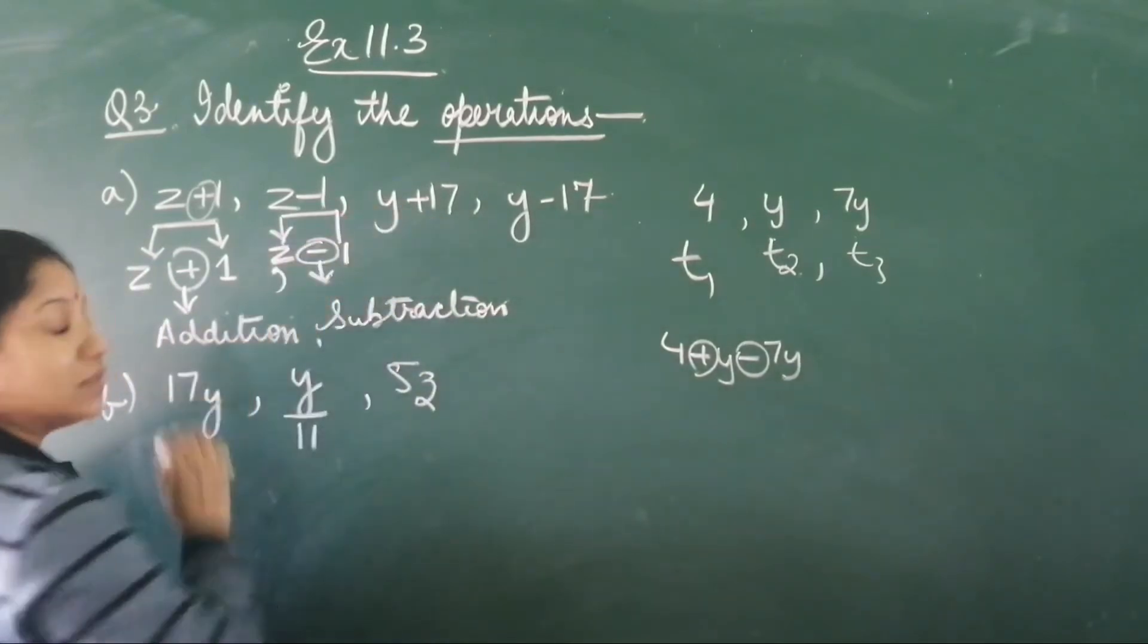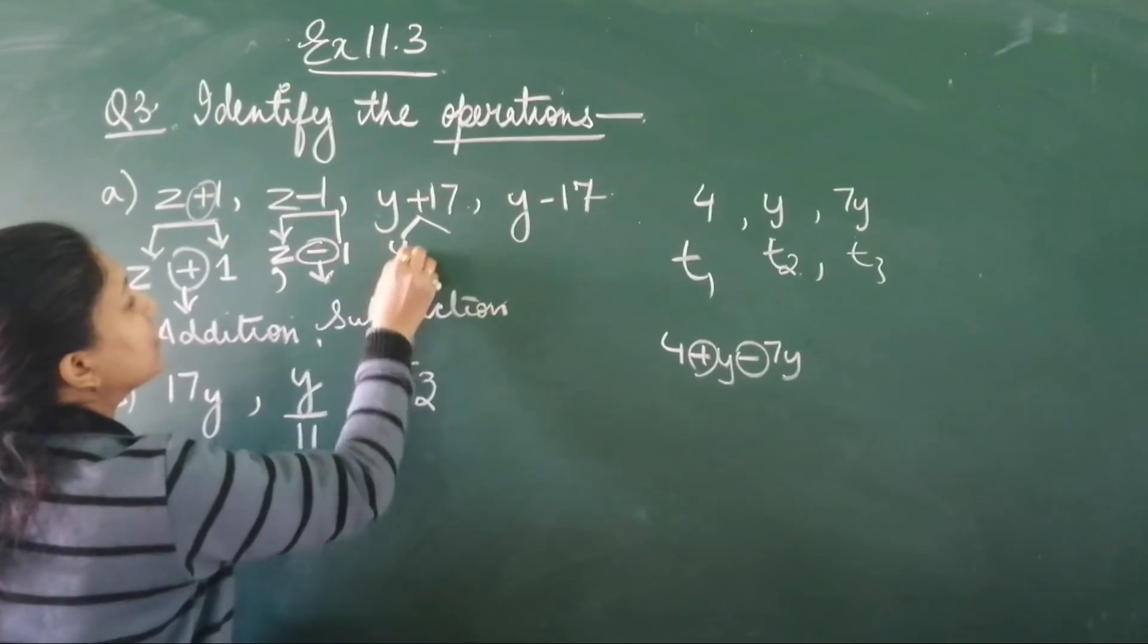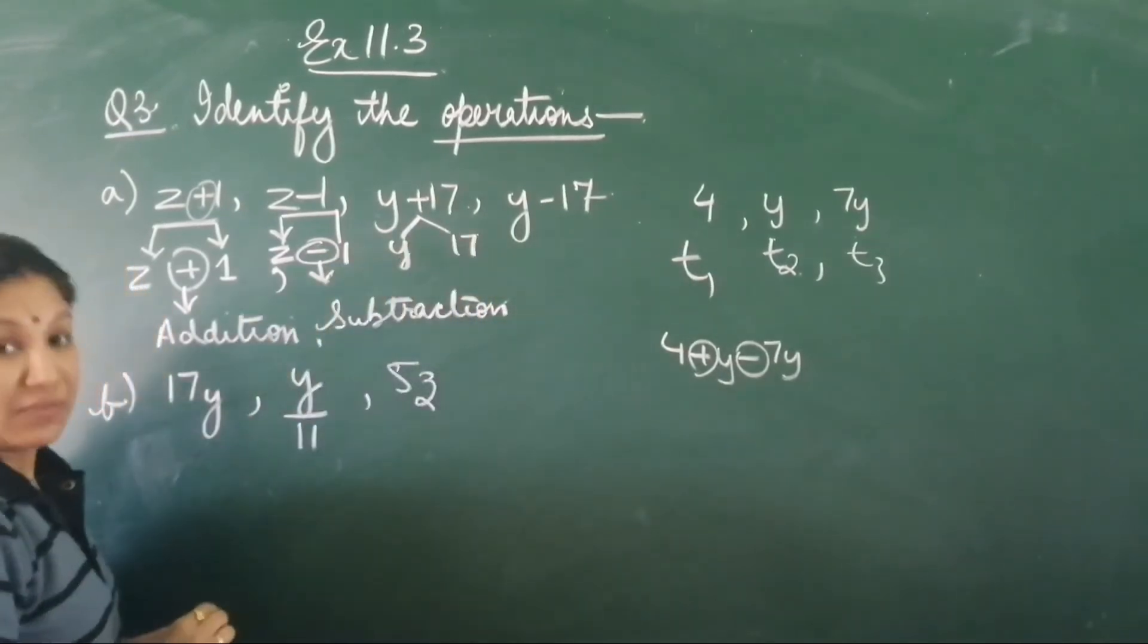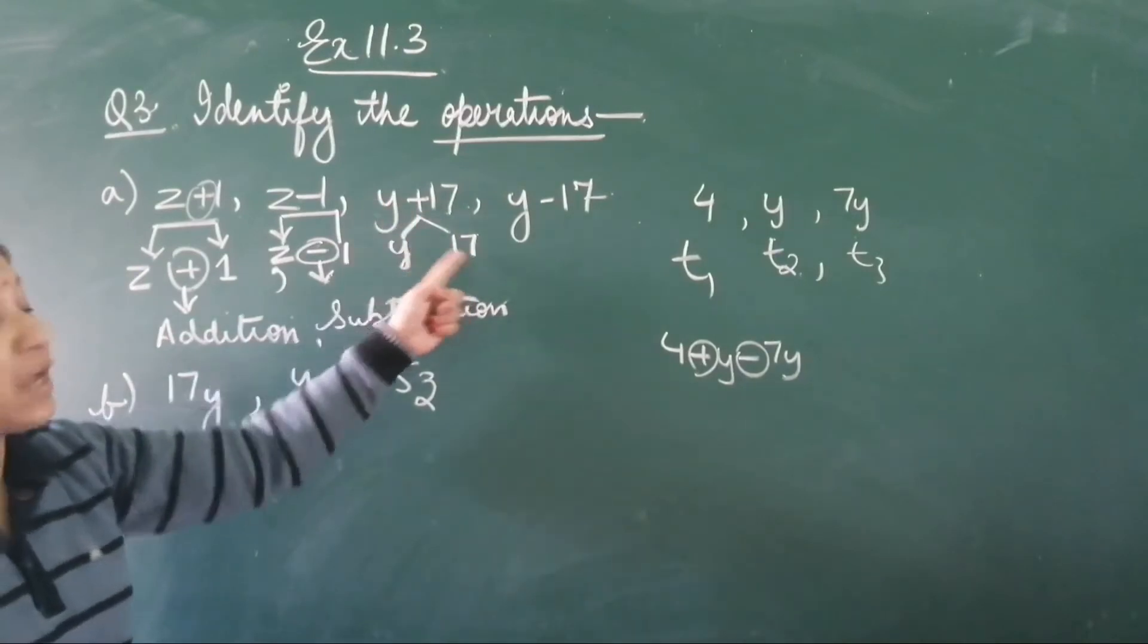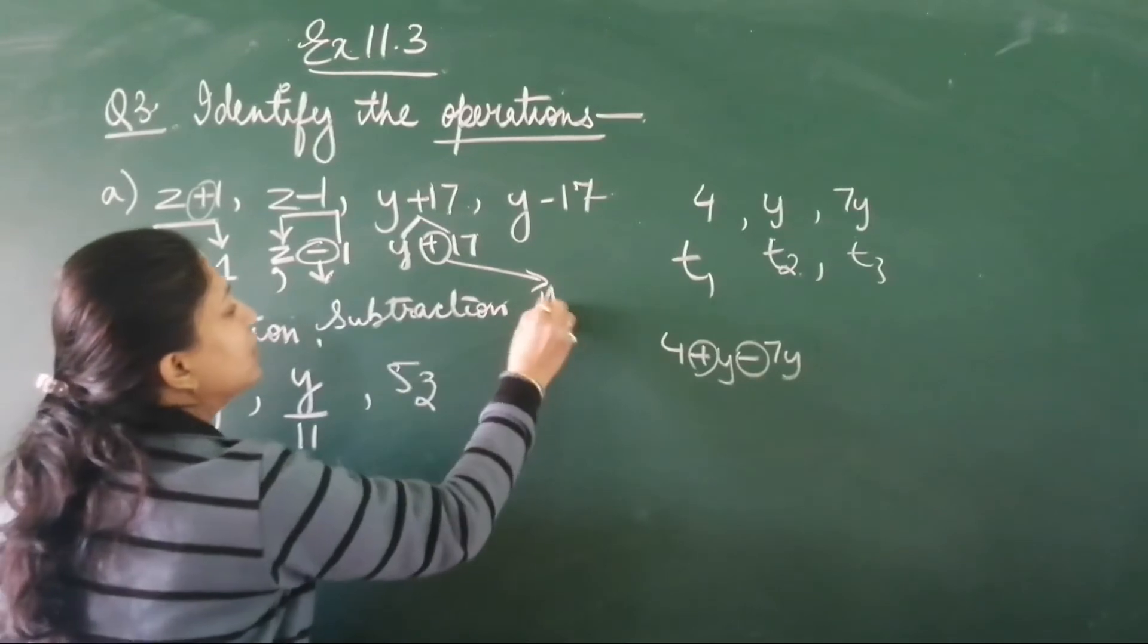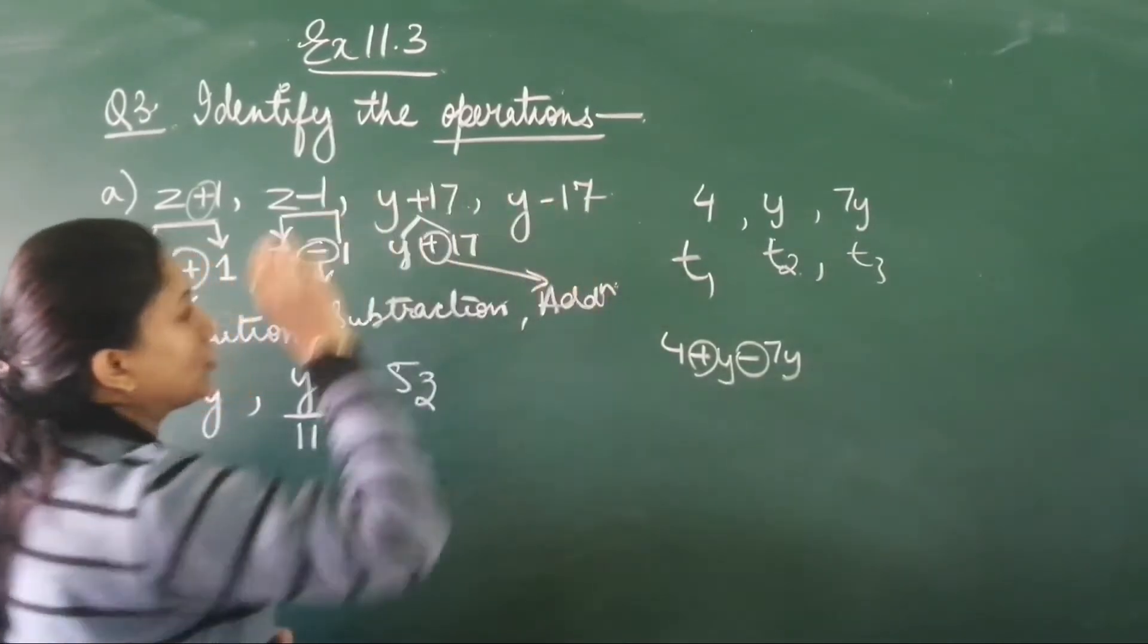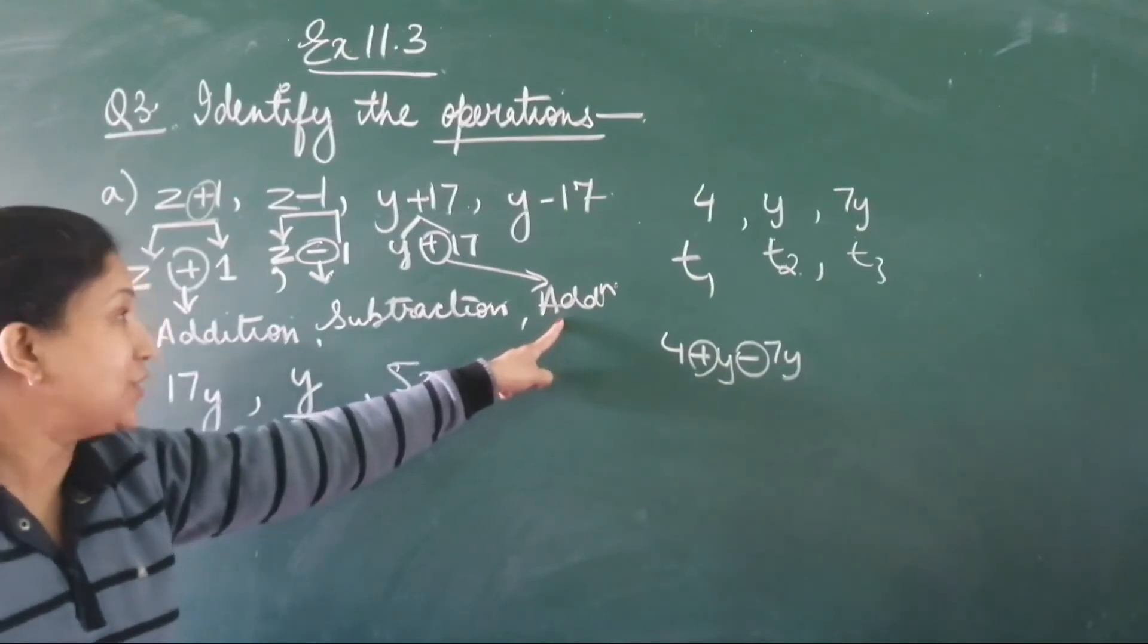Same way, look at the third one. How many terms you have here? Two. One is y and one is 17. y and 17, two terms they are joined by a plus sign. So a plus sign means you have to add, so which operator is this? This is for addition.